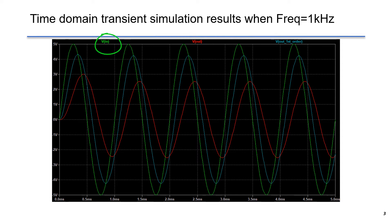Input voltage is in green. The Vout of second-order filter is in red. The last one is Vout in the first-order low-pass filter.